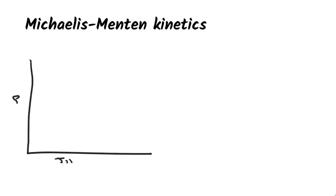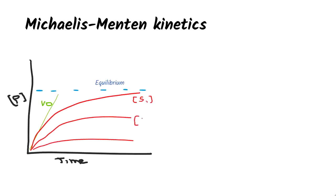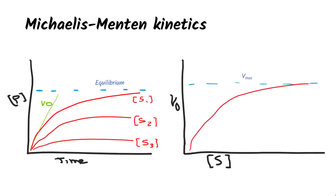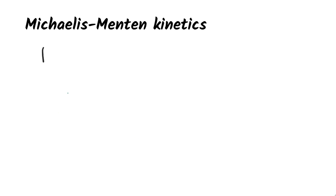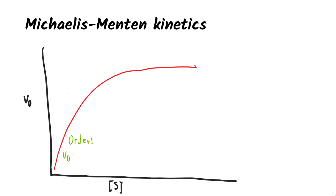In this kind of enzymes, at relatively low concentration of substrate, V0 increases almost linearly with an increase in S. In this stage, the reaction is said to be of order 1. At higher substrate concentrations, V0 increases by smaller and smaller amounts in response to increases in S. Finally, a point is reached beyond which increases in V0 are vanishingly small as S increases. In this stage, the reaction is said to be of order 0.